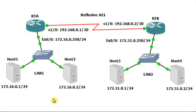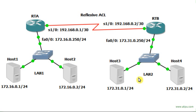To summarize: a reflexive access list allows all traffic generated from host 1 or host 2 to reach hosts 3 and 4 on LAN 2, and the reply packets are permitted back to the initiating host. However, if any host on LAN 2 tries to initiate traffic to reach hosts on LAN 1, it will not be allowed. This is one of the most important features of reflexive access lists. Thank you for viewing this example — I am Hakim Adish, bye.